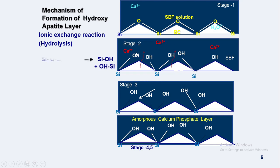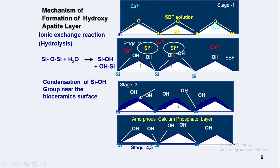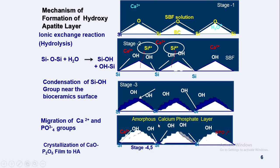This leads to formation of silanol group with the release of silicic acid, further leading to condensation of silanol group, which is indicated by the blue layer on the bioceramic surface. This leads to migration of calcium and phosphate ions, further forming amorphous calcium phosphate which converts into crystalline calcium phosphate layer with absorption of hydroxyl ions.